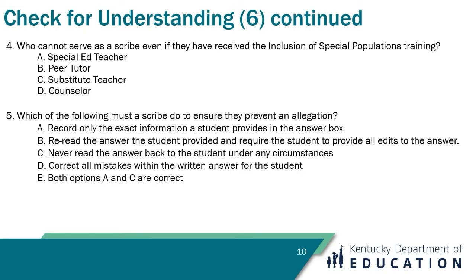Question five: which of the following must a scribe do to ensure they prevent an allegation? A — record only the exact information a student provides in the answer box. B — reread the answer the student provided and require the student to provide all edits to the answer. C — never read the answer back to a student under any circumstances. D — correct all mistakes within the written answer for the student. E — both options A and C are correct. The answer is E. As a scribe, your only job is to record the exact information provided to you by the student within the answer box of the test. The student must direct or provide any edits. A scribe also cannot read the answer back to the student.